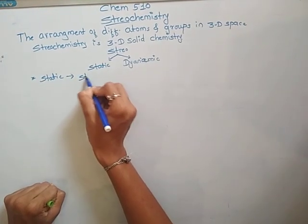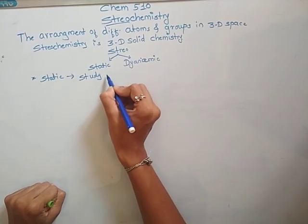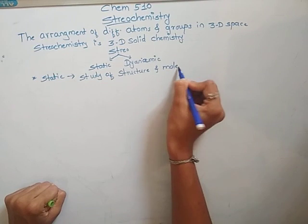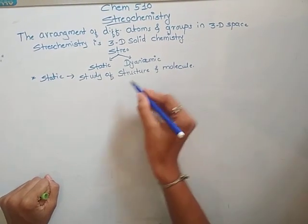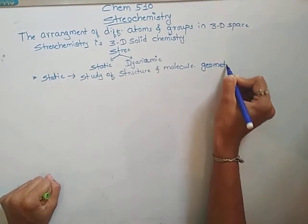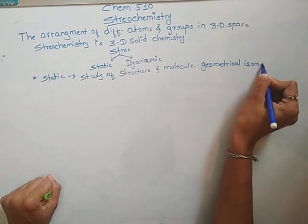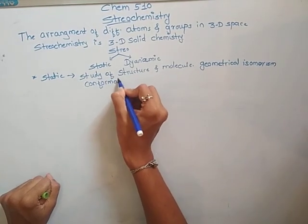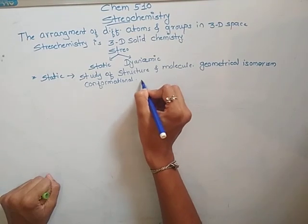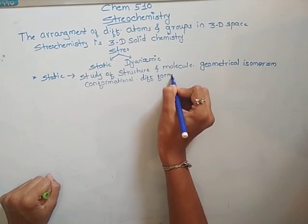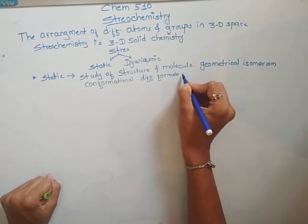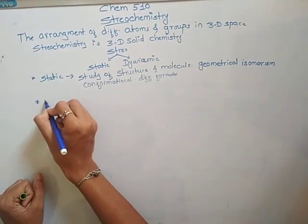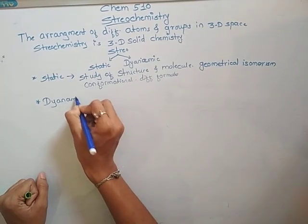Static stereochemistry deals with the study of structure and molecules, which includes geometrical isomerism, conformational studies, and different formulas used to represent the structure of a molecule, such as Fischer projection formula and Sawhorse projection formula.